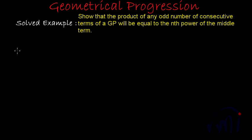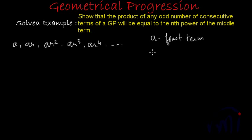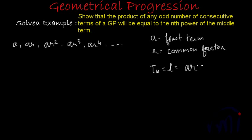Any geometrical progression is written as A, AR, AR², AR³, AR⁴ and so on, where A is the first term and R is the common factor. The nth term TN is equal to AR to the power n minus 1. These are the basics of any geometrical progression.